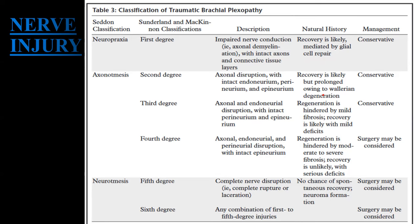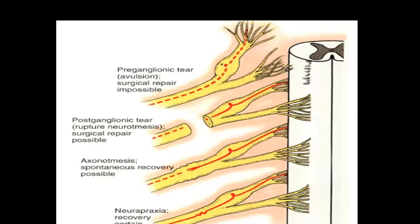First degree is neuropraxia, where you can see only impaired nerve conduction with intact axon and connective tissue layers. Second degree involves axonal disruption with intact endo-, epi-, and perineurium. Third degree includes axonal and endoneurial disruption with intact perineurium and epineurium. Fourth degree includes axonal, endo-, and perineurial disruption with only epineurium intact. Fifth degree is complete nerve disruption. Any combination falls under sixth degree.